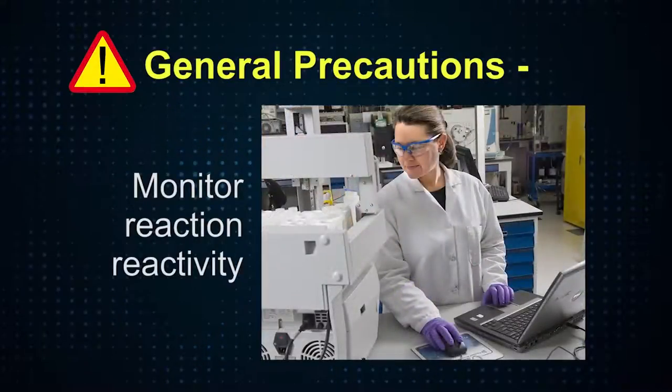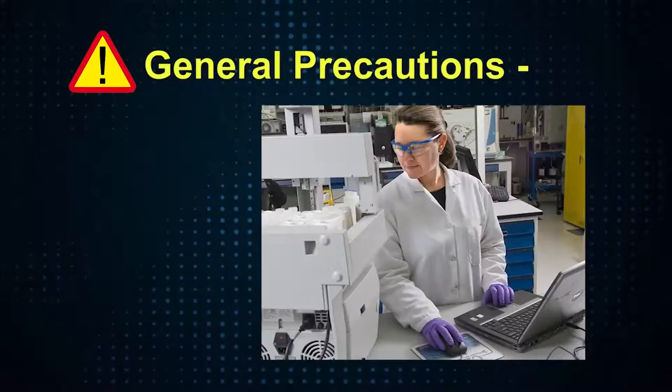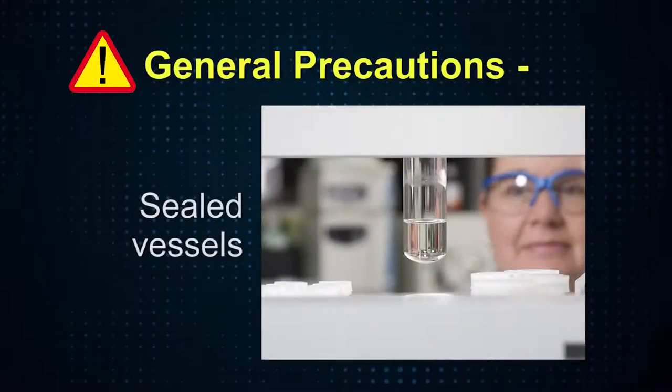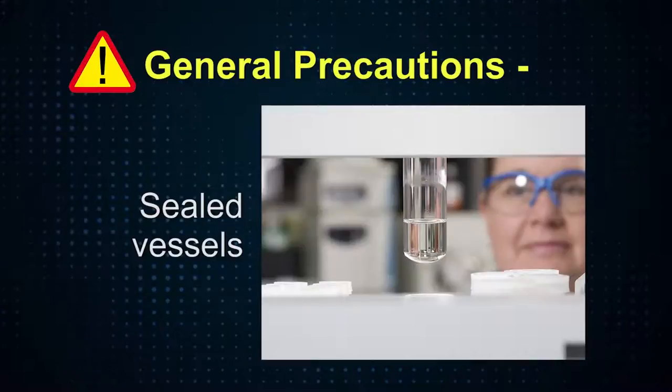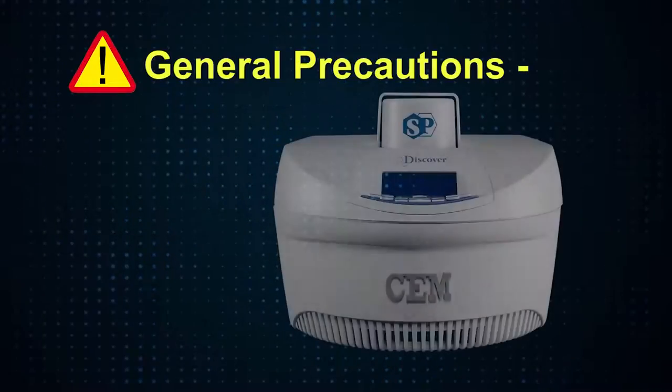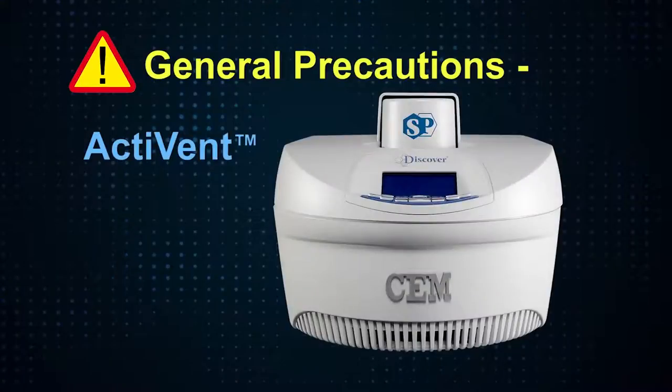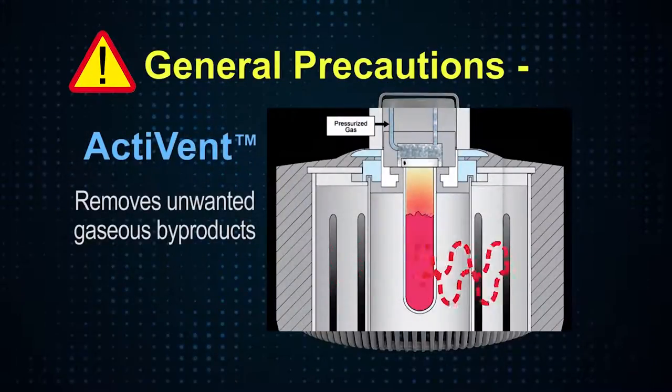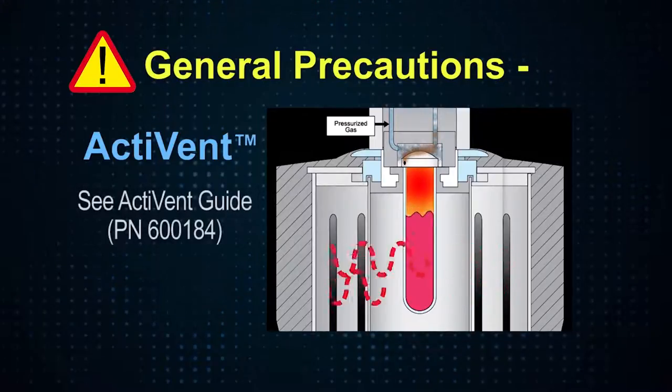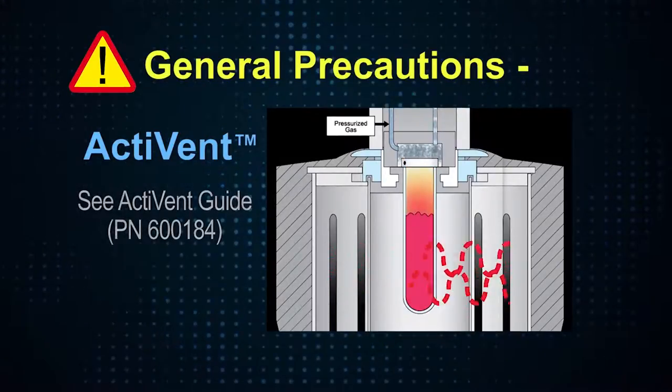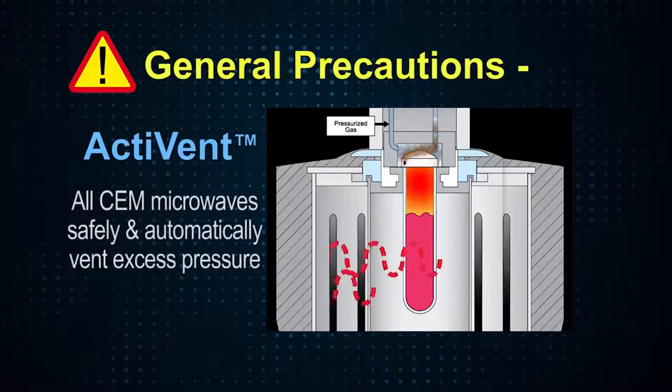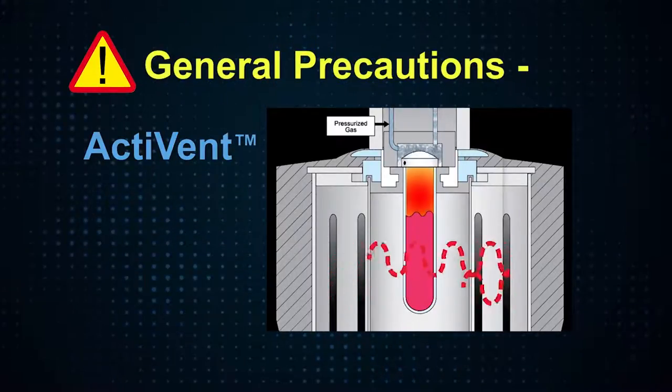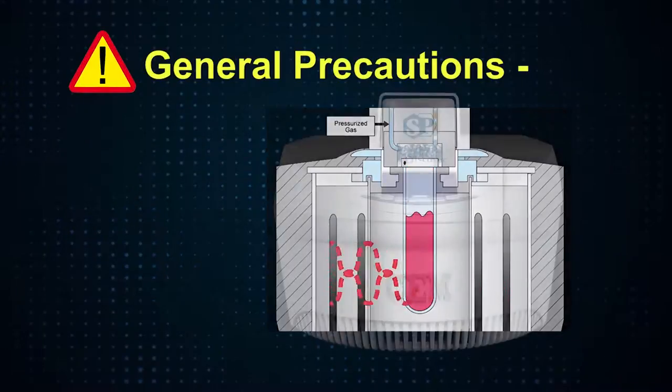Since microwave reactions are performed in sealed vessels, it's also important to be mindful of any gaseous byproducts generated during a reaction. The Discover SP features CEM's patented Activent pressure device which is capable of removing unwanted gaseous byproducts with user-defined settings. See the Discover Activent guide for instructions on programming in-situ venting. All CEM microwaves will safely and automatically vent excess pressure but chemists need to be aware of their chemistry.